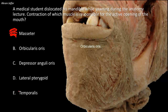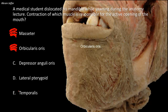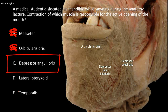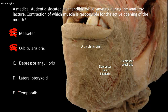Orbicularis oris has no action on the mandible. The opposing dilator mechanism is provided by several muscles fusing with orbicularis oris and radiating away from the mouth like the spokes of a wheel, including the depressor angulae oris and depressor labii inferioris. These are muscles of facial expression attached to the skin, acting as dilators of the mouth, but with no action on the mandible — so the third option, depressor angulae oris, is also wrong.